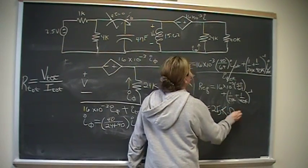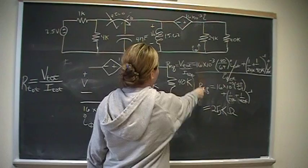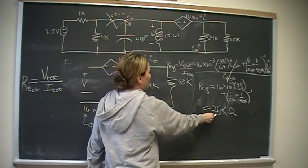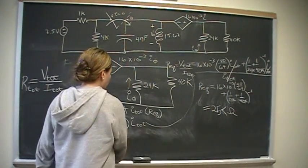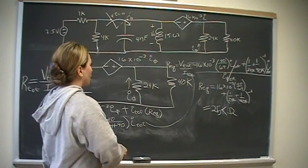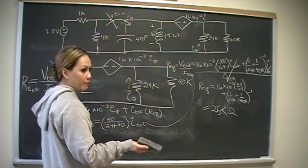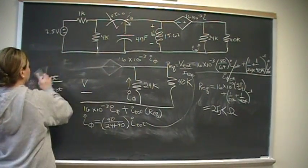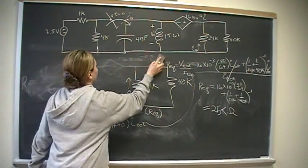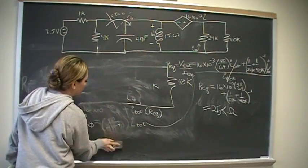So now we can replace all that in our circuit with 25 kilo-ohms. And so essentially what we did was kind of like a Thevenin equivalent circuit.